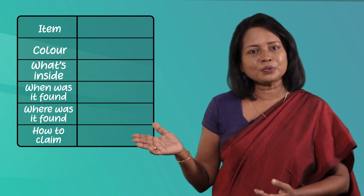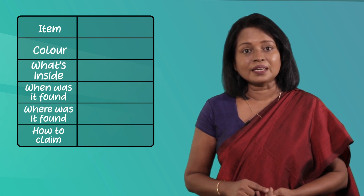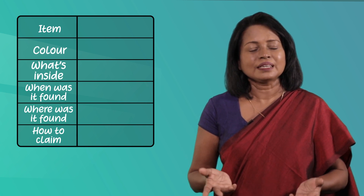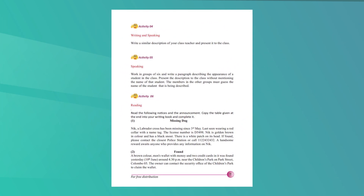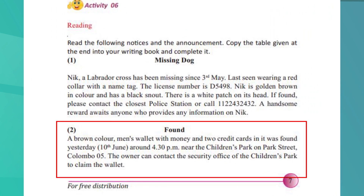Now that you have read one notice, let's read another. Although the earlier one was about a lost item, this one is written by someone who has found something. You have to read this notice and find the information to fill in a grid. You have to write what the item is, the colour, when and where it was found, and also how to claim it. Here is your notice — it appears on page 7 of your textbook. Read the notice and find the required information.